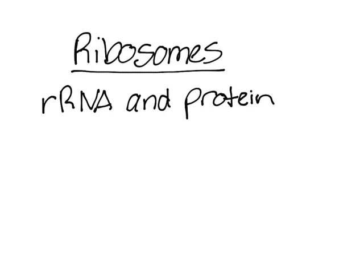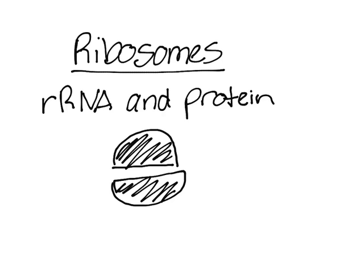A ribosome kind of looks like a hamburger bun. It's made up of two parts, essentially a top and a bottom. In the middle there are three spaces, and they correspond to the nucleotides of mRNA. mRNA, just to recap from the last video, is essentially a copy of your DNA, but the mRNA can leave the cell, leave the nucleus, and go into the ribosomes.